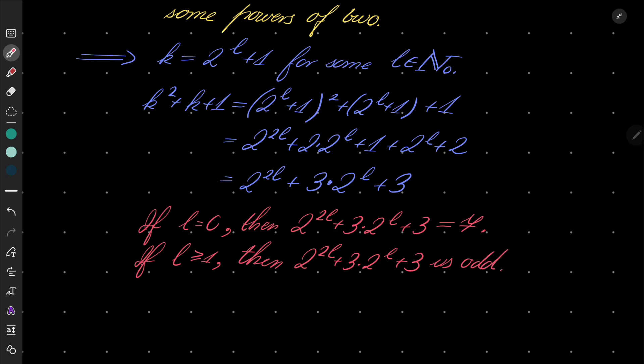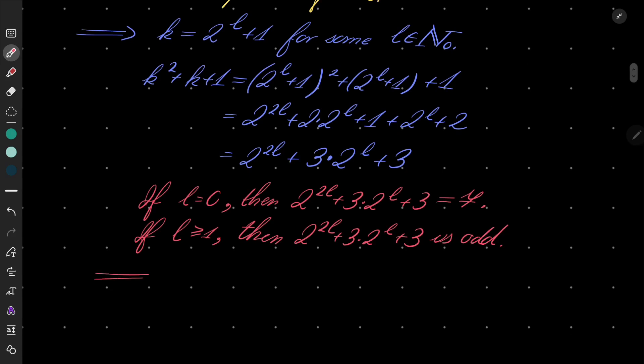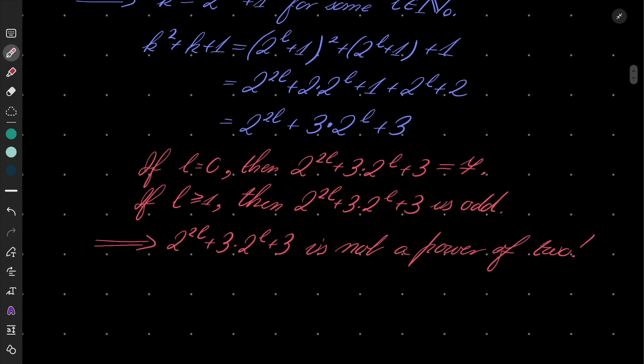So in either way we can't have a power of 2. That means that 2 to the power 2l plus 3 times 2 to the power l plus 3 is not a power of 2, and that's a problem because it should be for our equality to hold.